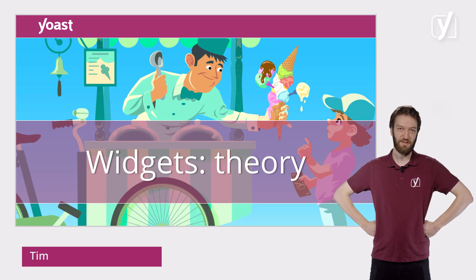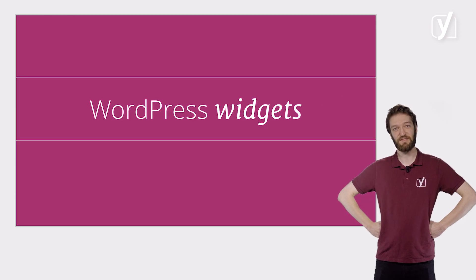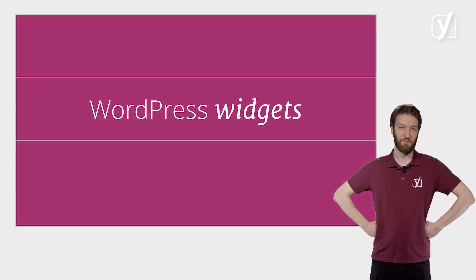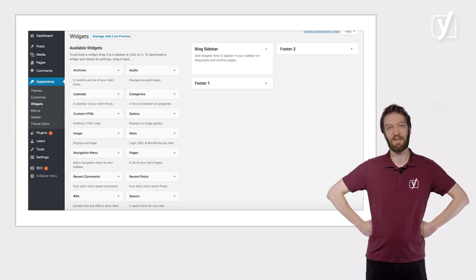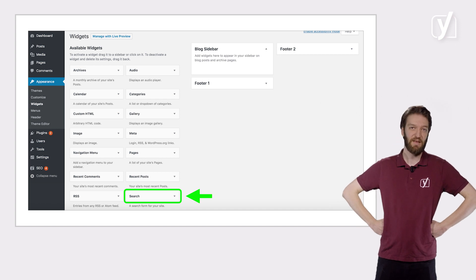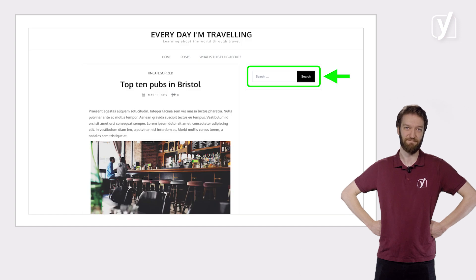In the previous lessons, we've discussed themes in the WordPress customizer. In this lesson, we'll talk about another aspect of customizing your site: widgets. A WordPress widget is a simple pre-built block you can add to your site that serves a specific function. Like the search bar widget — if you add the search bar widget to your sidebar, your visitors will be able to search the pages on your site.